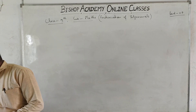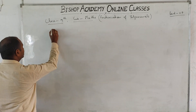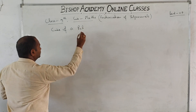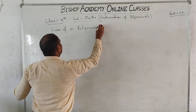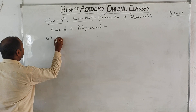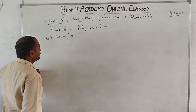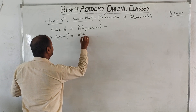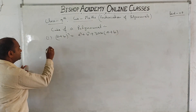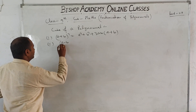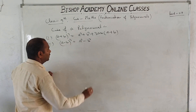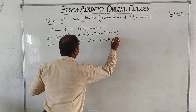Today your topic is cubes of polynomials. The first formula: A plus B whole cube equals A cube plus B cube plus 3AB in bracket A plus B. Second: A minus B whole cube equals A cube minus B cube minus 3AB in bracket A minus B.